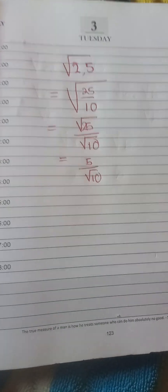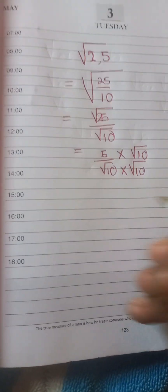You understand now? So you're going to multiply the denominator and the numerator with the square root of 10.